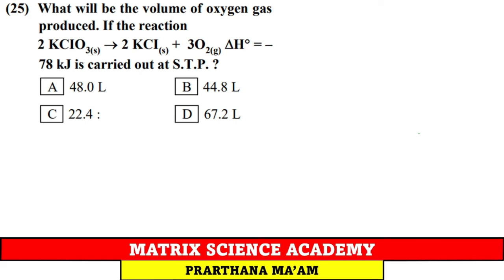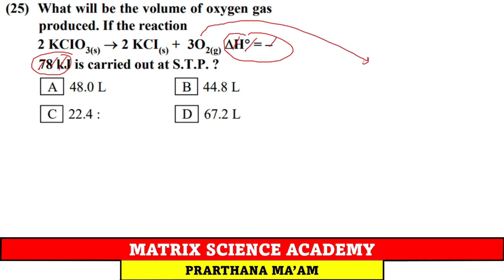Question 25: What will be the volume of oxygen gas produced from the reaction (2KClO₃ → 2KCl + 3O₂) at STP? 3 moles of O₂ corresponds to 3 × 22.4 = 67.2 dm³. Option D.